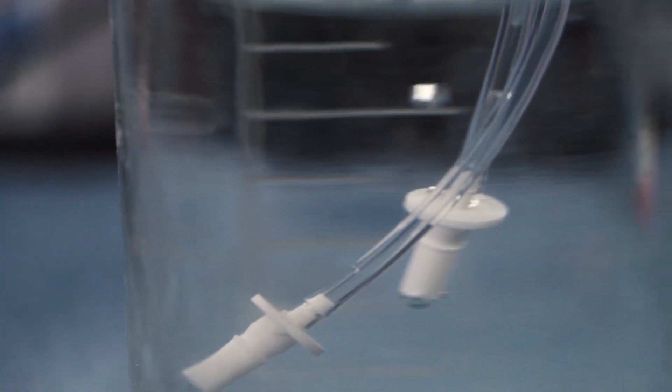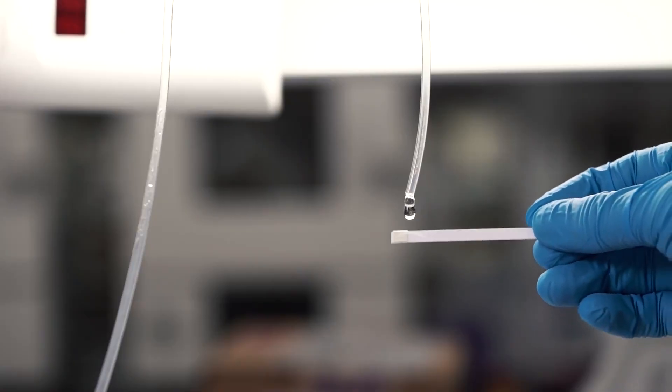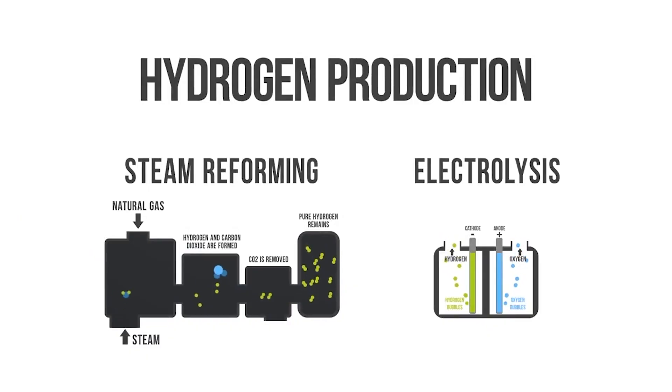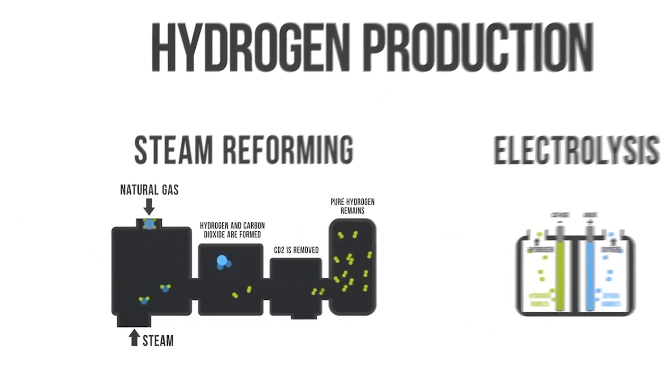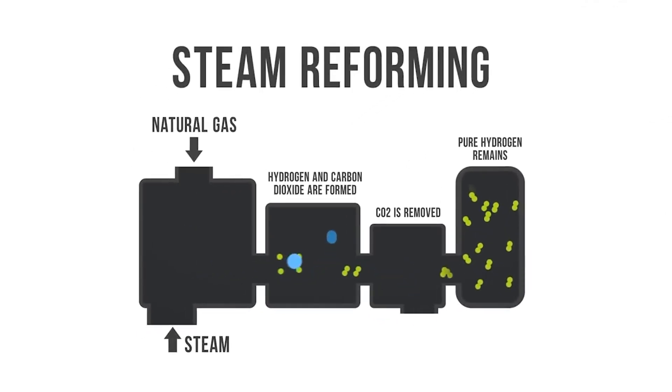However, the existing hydrogen production methods have their drawbacks. Currently, around 95% of hydrogen is derived from natural gas and coal, resulting in substantial carbon dioxide emissions between 9 to 12 tons of CO2 for every ton of hydrogen produced.